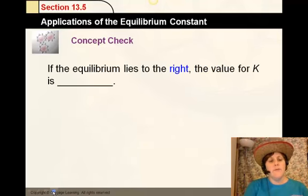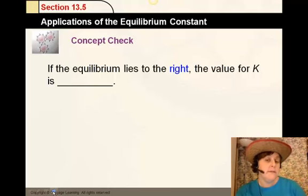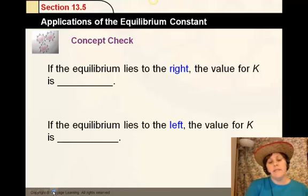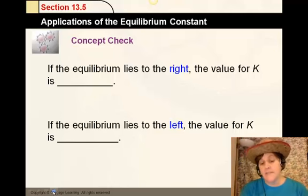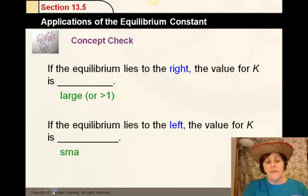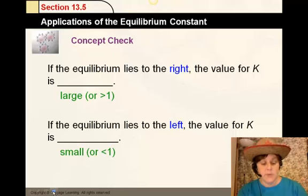If the equilibrium lies to the right, the value for K is what? And if the equilibrium lies to the left, the value for K is what? Obviously, if it lies to the right, that means you're gonna produce a lot of products, and the value of K is large. If it lies to the left, the value of K is small, and it is less than one. Therefore, it doesn't produce products easily.